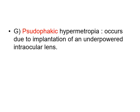Pseudophakic hypermetropia is the term used after implantation of an underpowered intraocular lens. When calculating intraocular lens power to achieve emmetropia, abnormal calculations or aberrations can result in implanting an improper diopter power, giving a refractive surprise. If an underpowered intraocular lens is accidentally implanted, the patient will have pseudophakic hypermetropia.